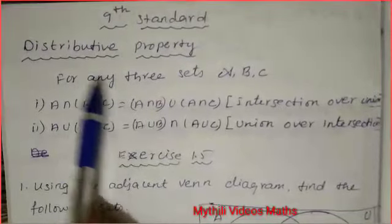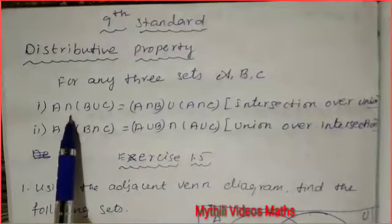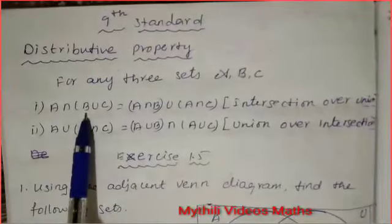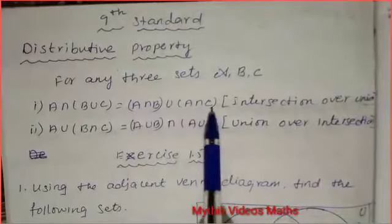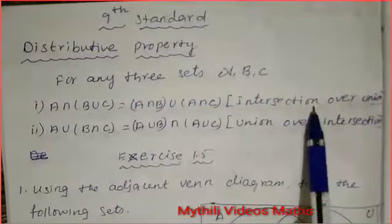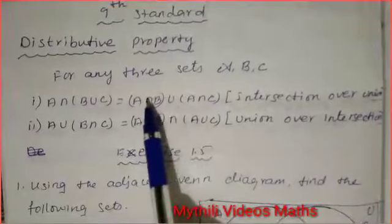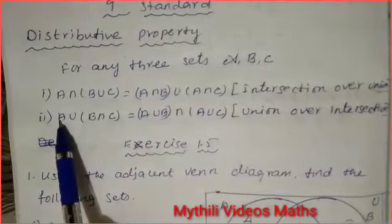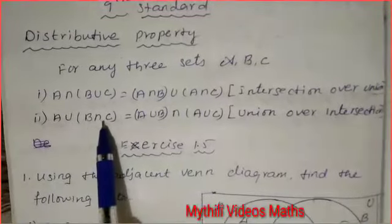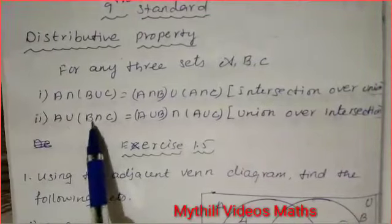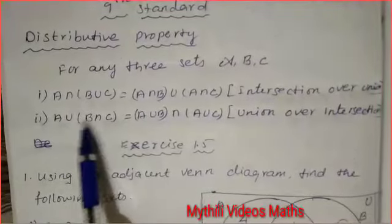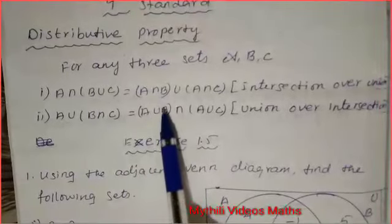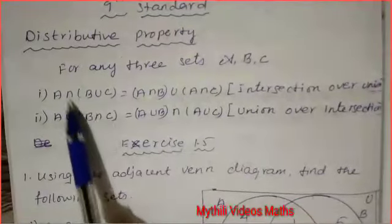Now we do the distributive property. The first formula is: A intersection (B union C) = (A intersection B) union (A intersection C) — this is intersection over union. The second formula is the opposite: A union (B intersection C) = (A union B) intersection (A union C) — this is union over intersection. These two are opposite formulas.